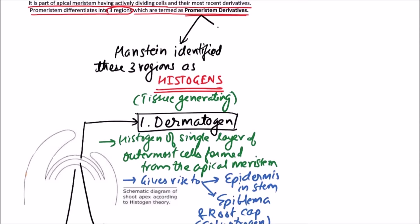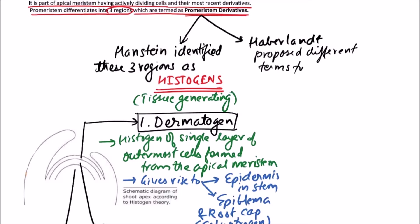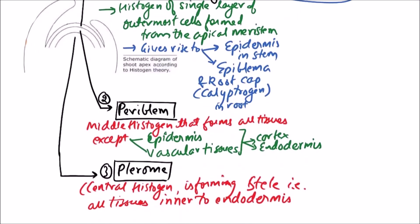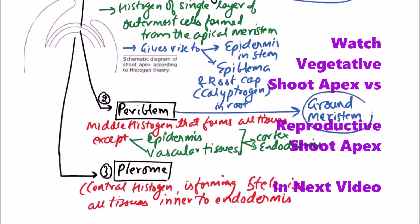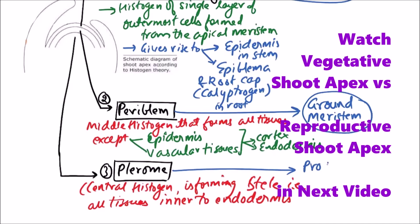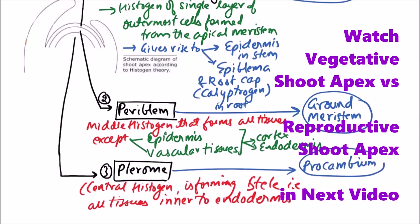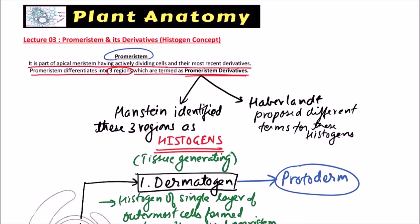Another worker, Haverland, proposed different terms for these histogens. Dermatogen was termed as protoderm, periblem was termed as ground meristem, and plerome was termed as procambium, while the functions were the same. So this is all about the promeristem and its derivatives. Thanks for watching this video.